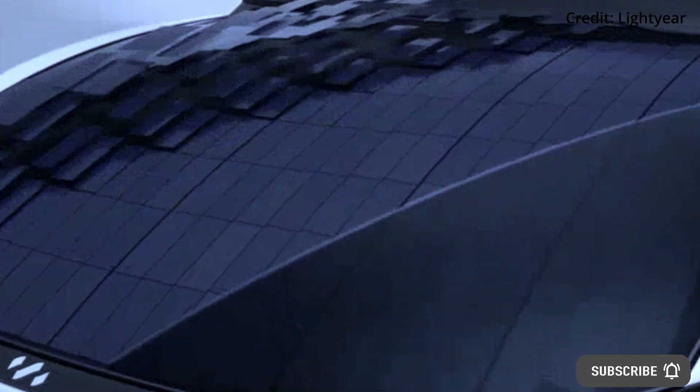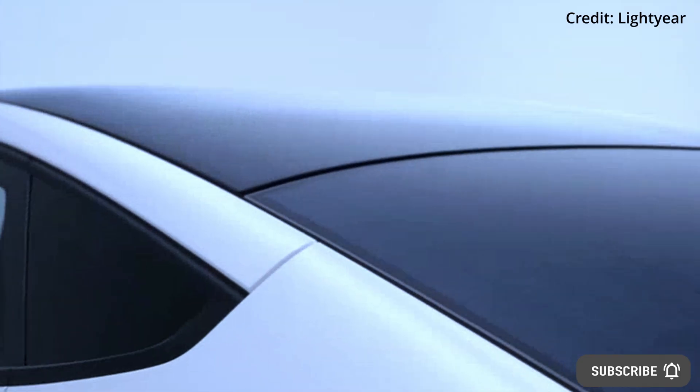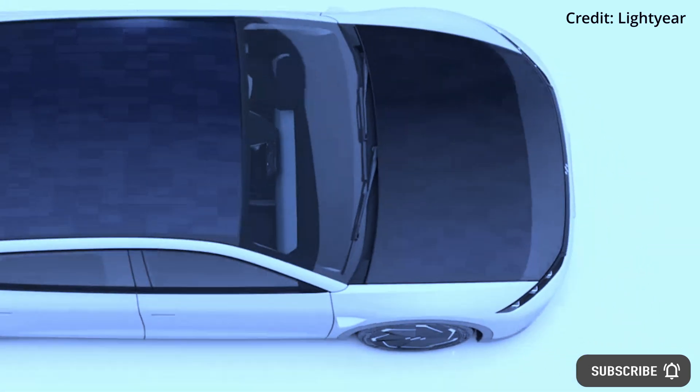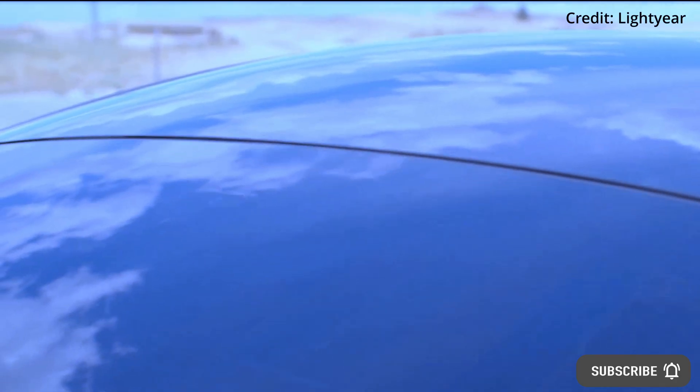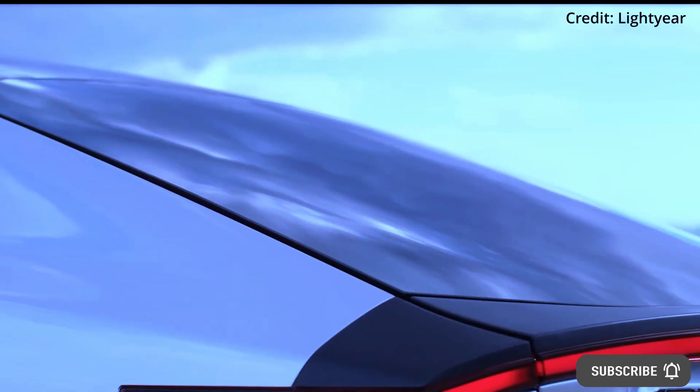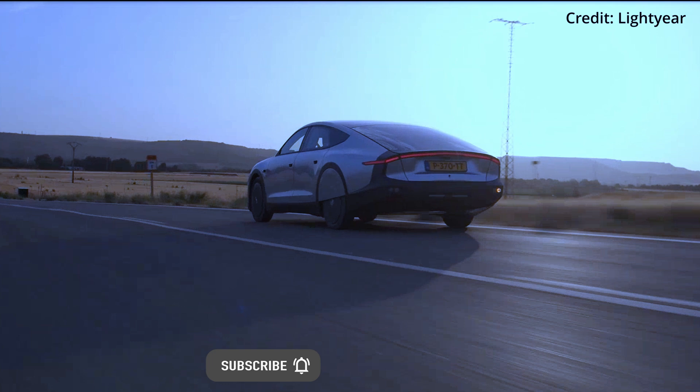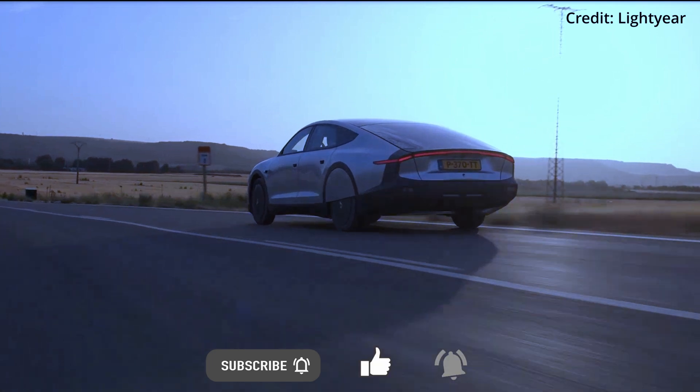Lightyear launches world's first production-ready solar-powered electric car. Dutch startup Lightyear has unveiled its Lightyear Zero electric car that has five square meters of curved solar panels integrated into the car's roof, bonnet, and tailgate, which will convert renewable solar energy into electric power for driving.